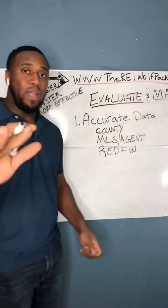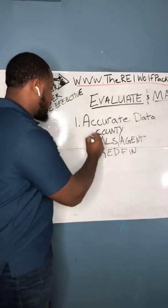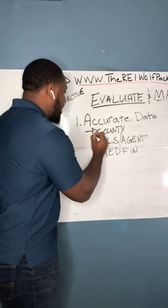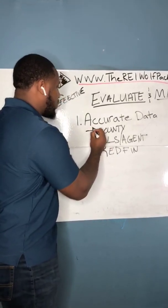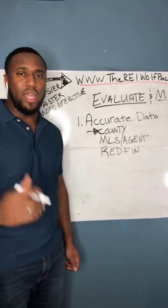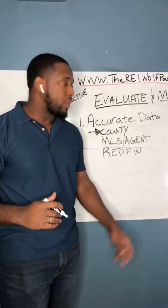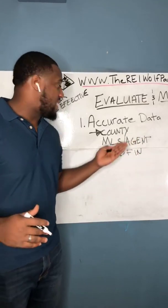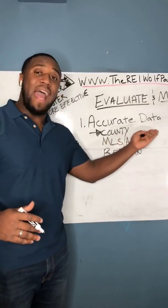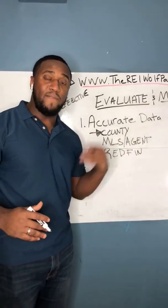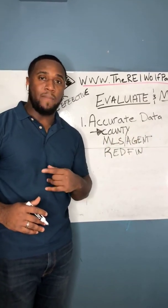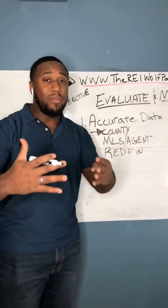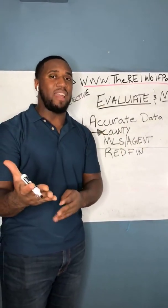The first place you can get your data from is from the local county where the property is located. Go to the county website and see what homes have actually been selling for in the area. That's going to be extremely, extremely accurate.